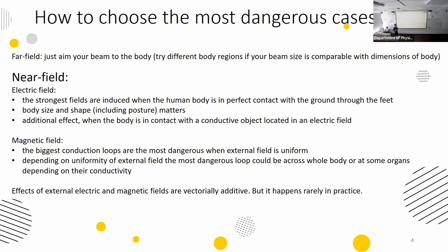For magnetic fields: magnetic fields don't harm you directly by themselves, but they produce induced electric fields in you by Faraday's law. The bigger the conduction loop through which current flows, the bigger the internal induced electric fields you get. Depending on the uniformity of your external magnetic field, the most dangerous loop could be across the whole body volume. In cases when the external field is not uniform, the biggest loop could be within some specific organs. The biggest induced fields also depend on the conductivity of the tissues, and these effects are vectorially additive.